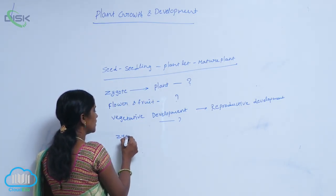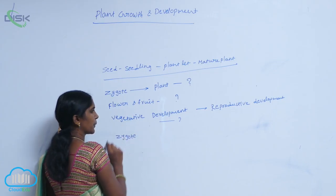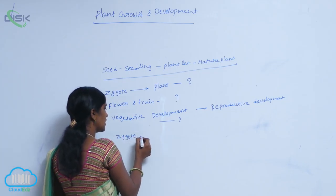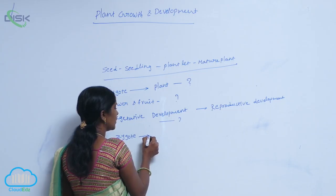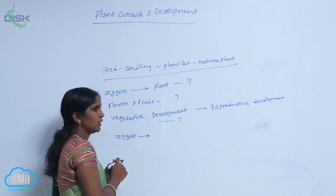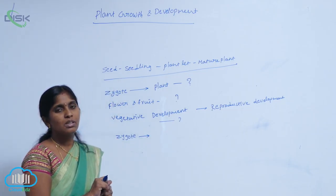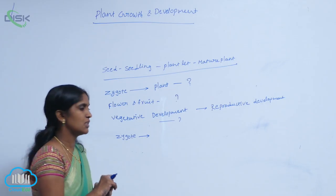Zygote is basically the basic structure. That zygote, when it goes for continuous successive divisions...